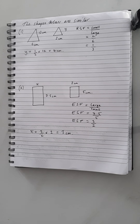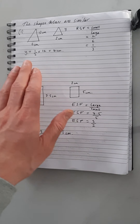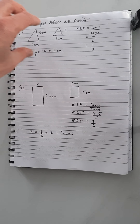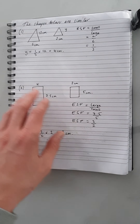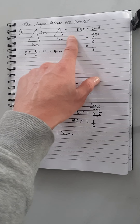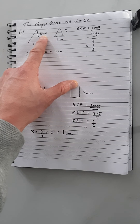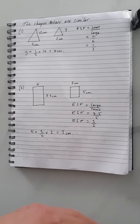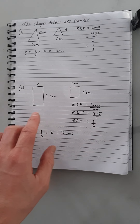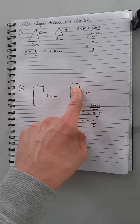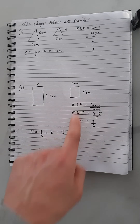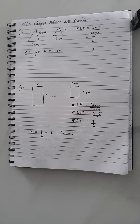Just before we finish, there's a quick check you can do. For the first example — it's a reduction, so the answer for y must be smaller than 12. It is: 4 is smaller than 12, so that checks out. For the second example — it's an enlargement, so the breadth of the bigger rectangle must be larger than the breadth of the smaller one. 3 is bigger than 2, so that's correct. That's enlargement and reduction scale factors for finding missing sides of similar shapes.